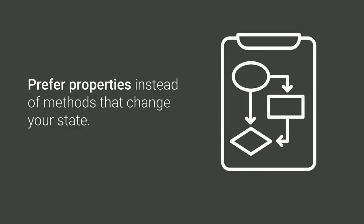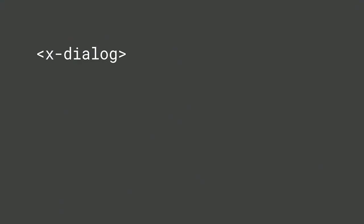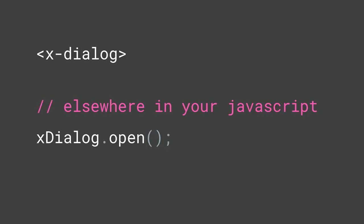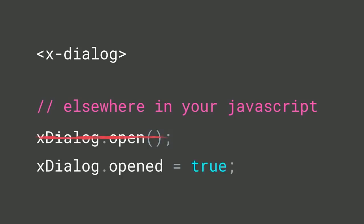I would recommend preferring a properties-driven interface over one heavy on methods. For example, if you're building a dialog element, it's tempting to say the only way to render it in its open state is for someone to query it in JavaScript and call an open method. Instead, give it an open property with a setter on your class — setting that property is what renders the open state.